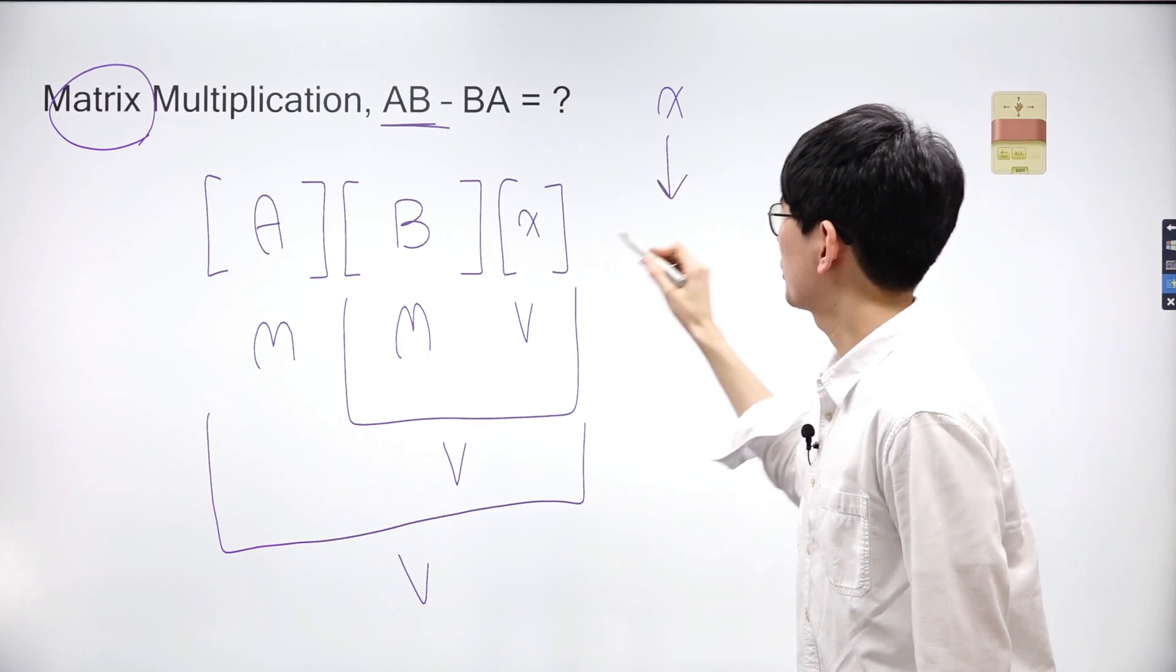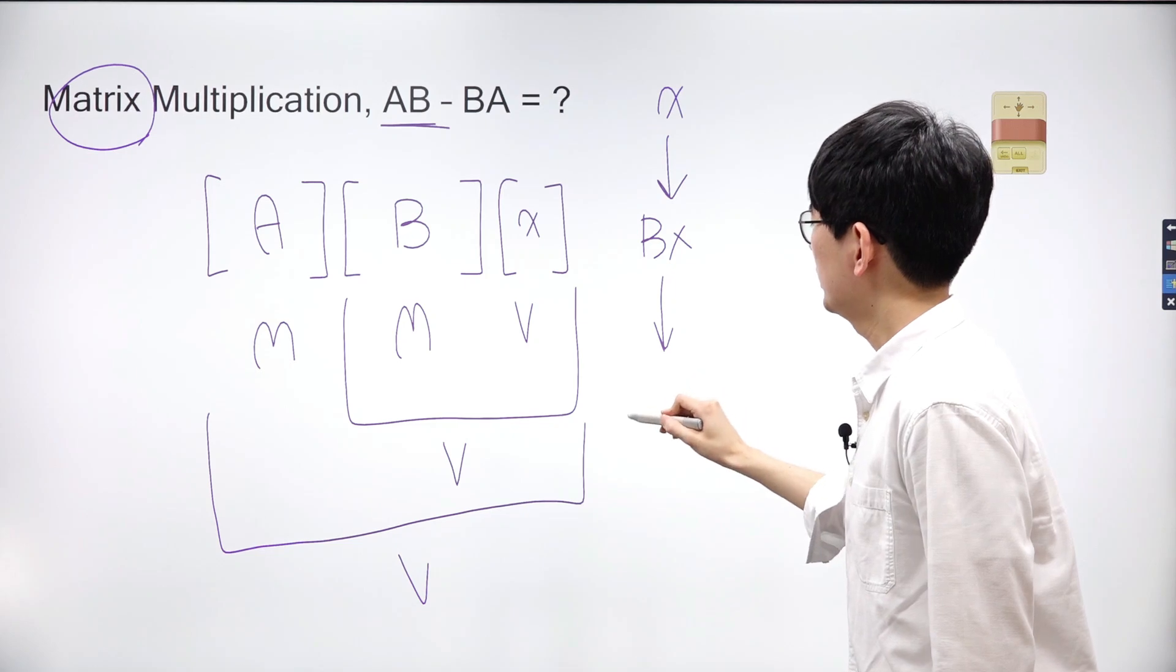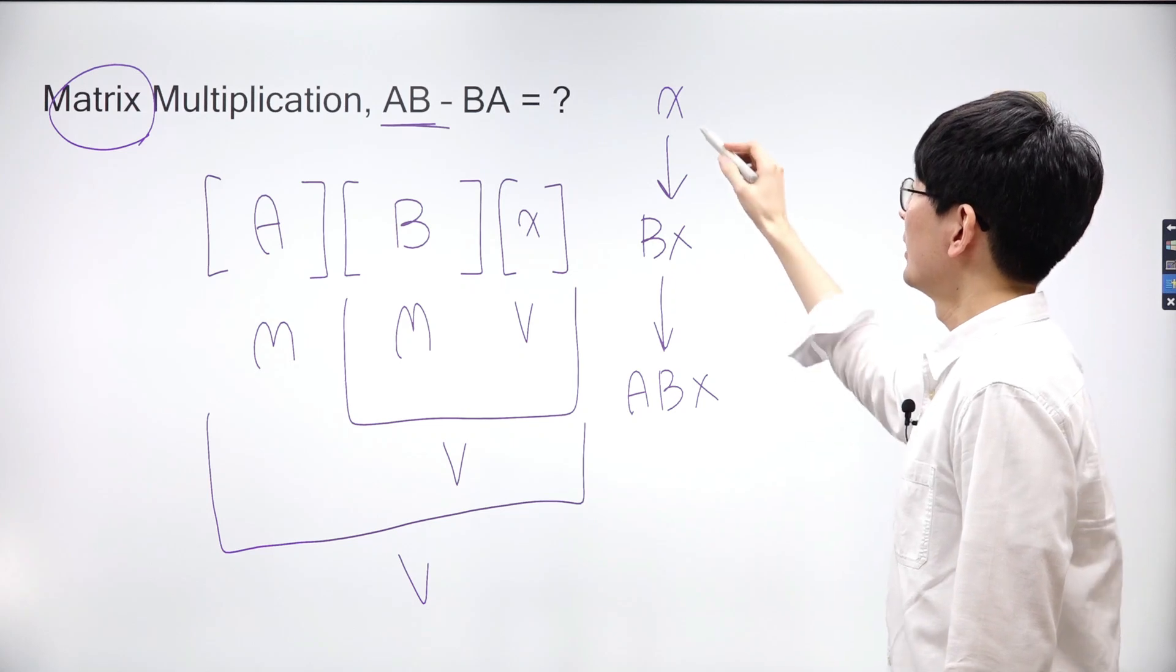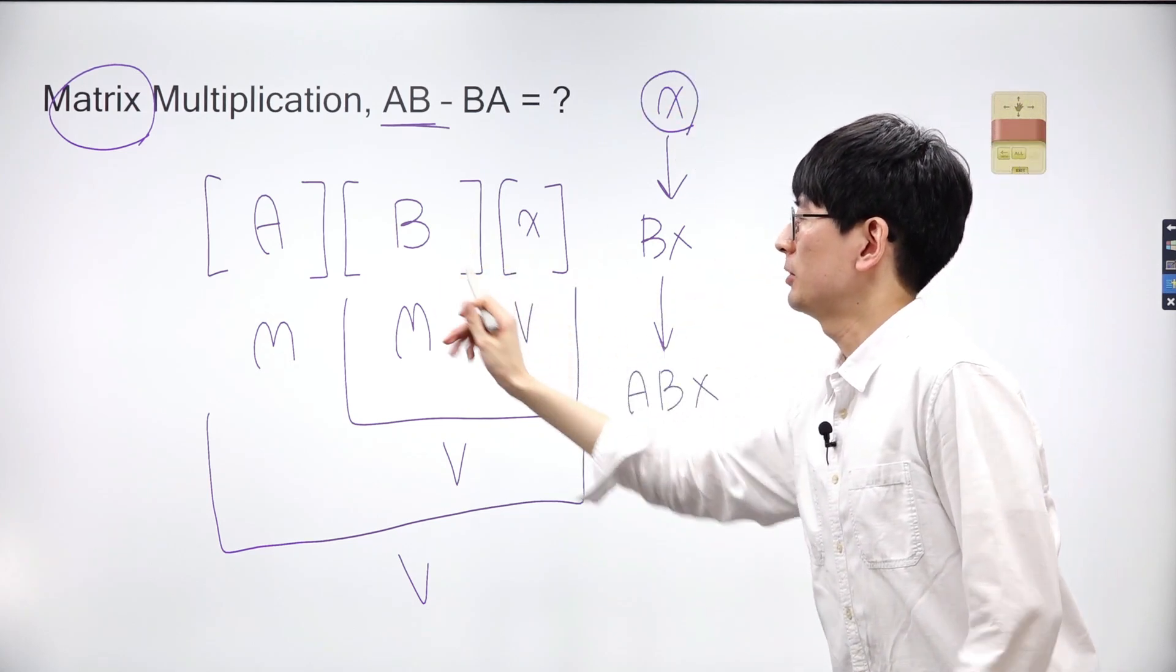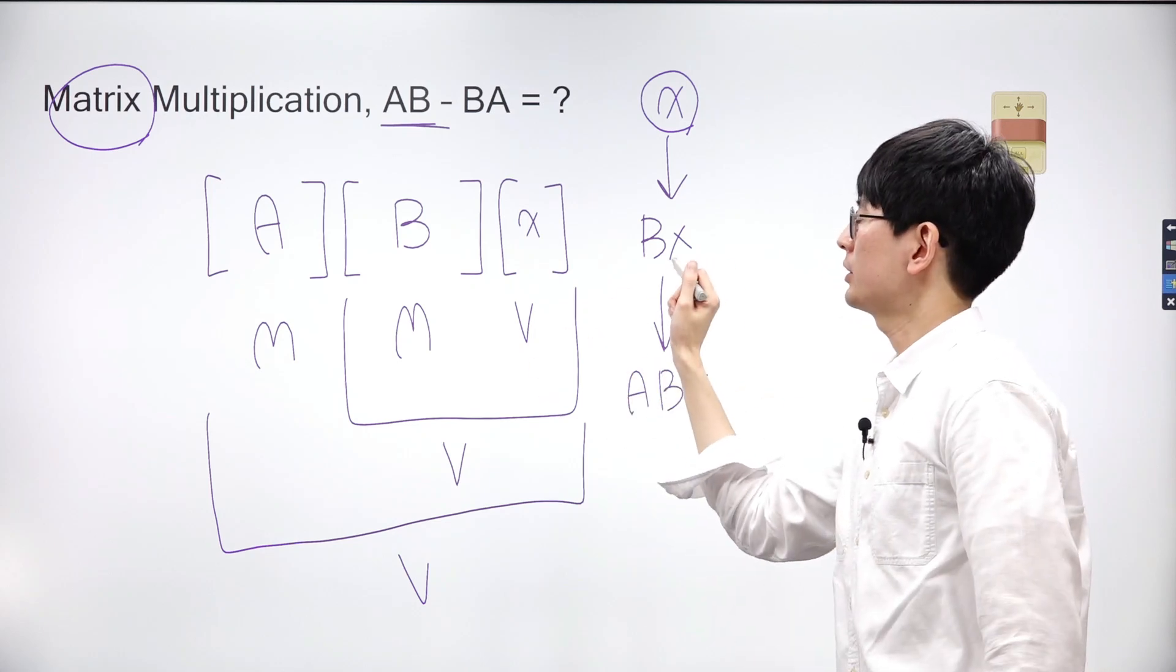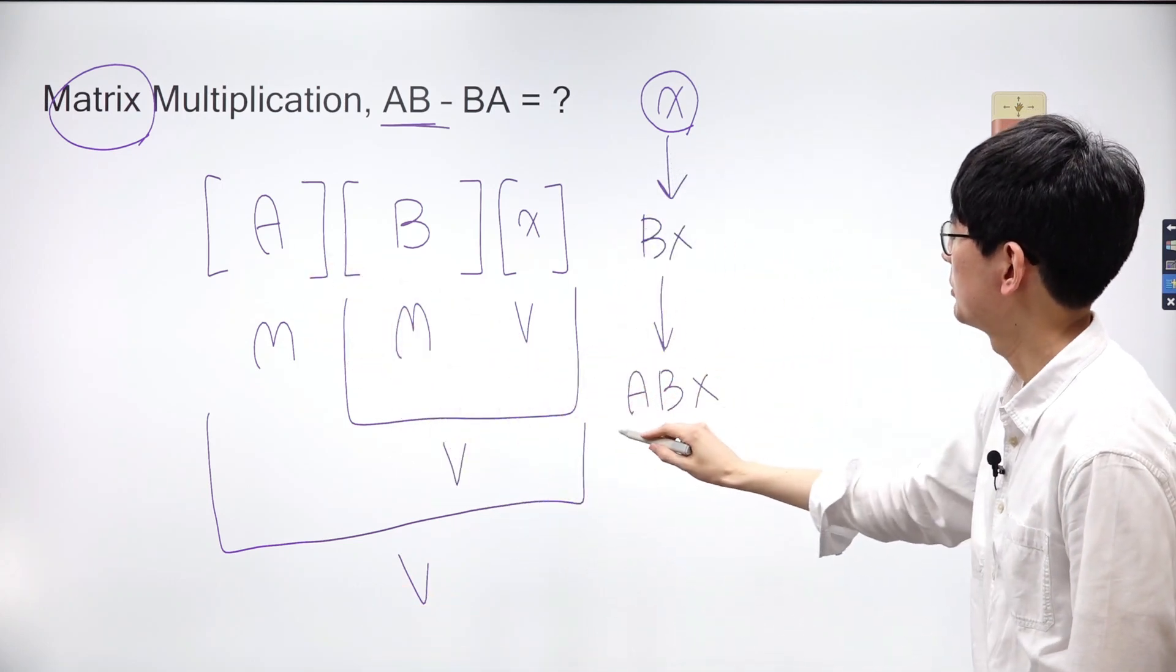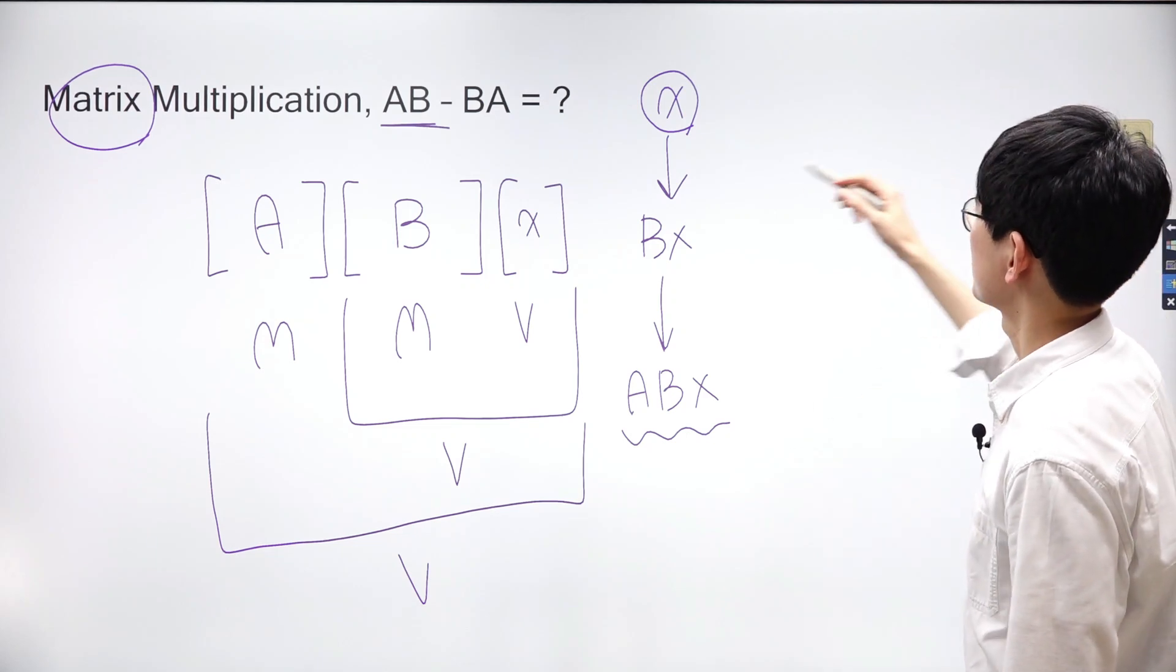To summarize, we initially had vector x, which we then multiplied by matrix B. Next, we multiplied matrix A by the product of matrix B and vector x. Let's approach this process conceptually. When we multiply matrix B by vector x, we tilt the initial coordinate space. Subsequently, by multiplying the resulting product by matrix A, we tilt the already tilted coordinate space once more.